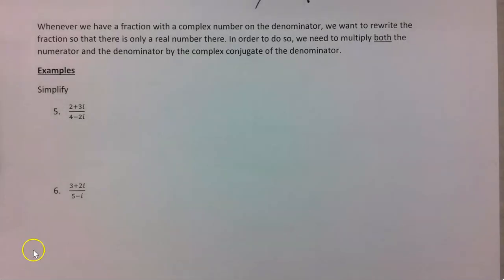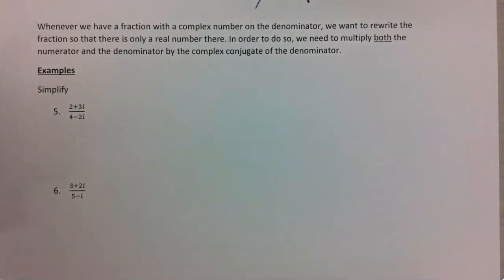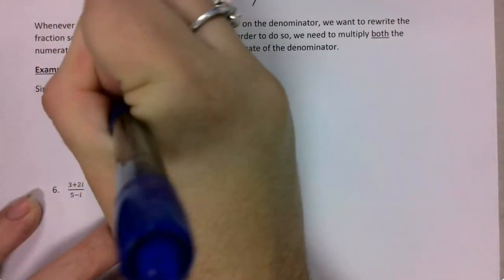Now on these ones, they're actually fractions. What I'm going to do is take the denominator and multiply by the complex conjugate of the denominator for both the numerator and denominator. For this first one I'm going to be multiplying by 4 plus 2i.